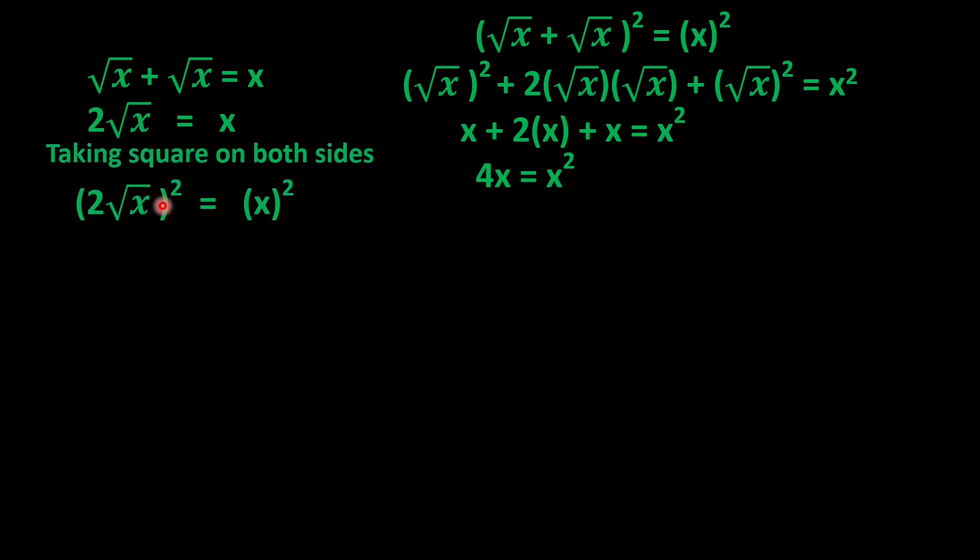When we take square on both sides, the square multiplies to become 4, and this square cancels the under root. So it becomes 4x = x². And again we arrive at the same position, 4x = x².